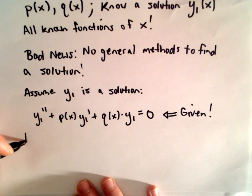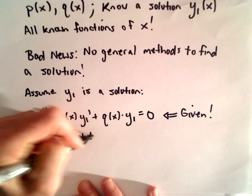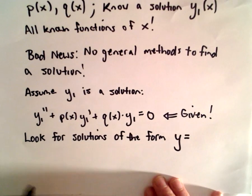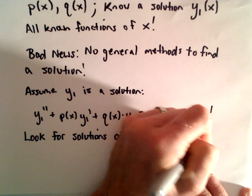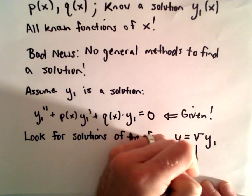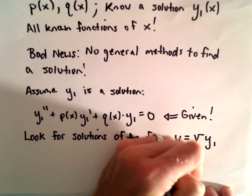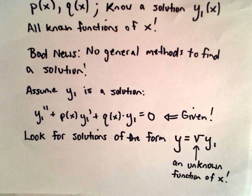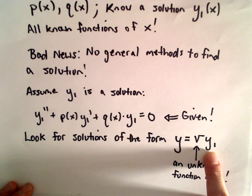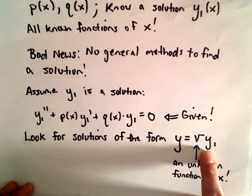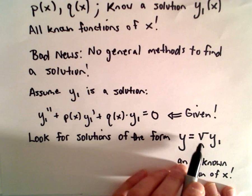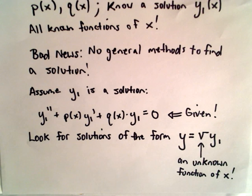So the trick is we look for solutions of the form y equals v times y sub one. Here v is going to be an unknown function of x, and that's the goal. We already know that y sub one is some function of x — if we multiply it by some other unknown function of x, that's going to be our other solution. So why does it work that we can take our original solution and multiply it by some other function? Why does it turn out that this is going to give us a solution? Let's just grind through it.